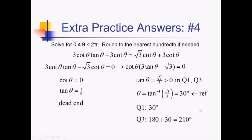Now we're not quite done because we needed radians for this answer. Although they said nearest tenth, you can also get the exact value by multiplying by pi over 180. So if we do that with 30 degrees — 30 over 180 gives us 1 over 6, so pi over 6 for that answer. And then 210 — reducing that with 180 with a pi on top, reducing by 30s, we get 7 pi over 6. So those are our two answers.